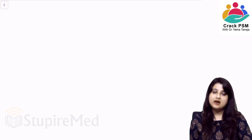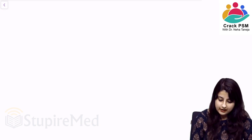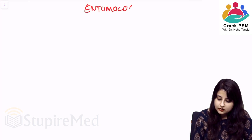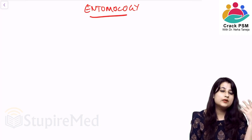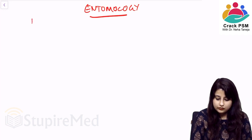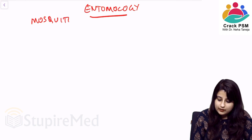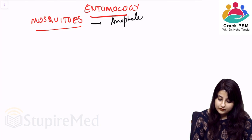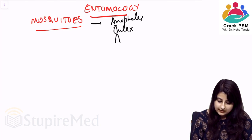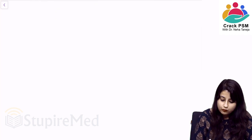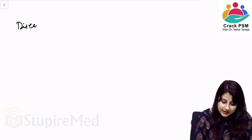Hello students, we're going to start with a very important topic — the last part of environment. The topic is entomology. They straight away ask image-based questions or ask which disease is transmitted by which vector. The first thing we're going to see is mosquitoes. When we talk about mosquitoes, you have to study about Anopheles, Culex, Aedes, and Mansonia. Let's look at what diseases are transmitted by each of these.